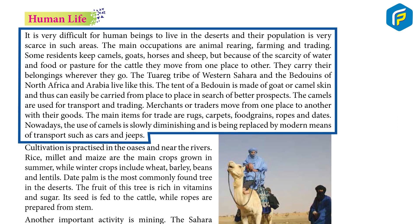Human Life: It is very difficult for human beings to live in the desert and their population is very scarce. The main occupations are animal-rearing, farming, and trading. Some residents keep camels, goats, horses, and sheep. But because of the scarcity of water and food or pasture for the cattle, they move from one place to another. They carry their belongings wherever they go. The Tuareg tribe of Western Sahara and the Bedouins of North Africa and Arabia live like this.